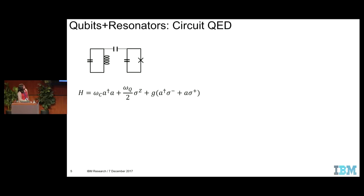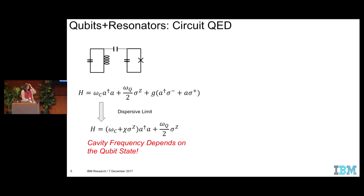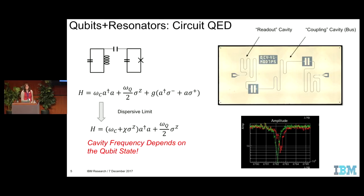Here is our qubit. What happens when you couple this to a resonator? A resonator is just a regular LC circuit. Here's the Hamiltonian of the interaction between the qubits and the resonator. In the dispersive limit, where the qubit frequency is well detuned from the cavity frequency, the cavity frequency depends on the state of the qubit — that is how we read out the state of the qubit. Here is a sample of a two-qubit device: two transmon qubits coupled by a coupling cavity, which I'll call a bus, and each qubit has a readout cavity. Depending on the state of the qubit, when you put a microwave tone in this cavity and sweep the frequency, you'll see state-dependent resonance. This is how we probe the state of the qubit.